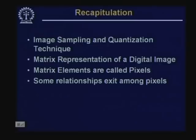After digitization, we have found that an image is represented in the form of a two-dimensional matrix which we call a digital image, and each of the matrix elements is called a pixel. Now, when we represent the image by a matrix and the different points are called pixels, it is found that some important relationships exist among those pixels. In today's lecture, we will try to find out what are the different important relationships that exist among different pixels of an image.